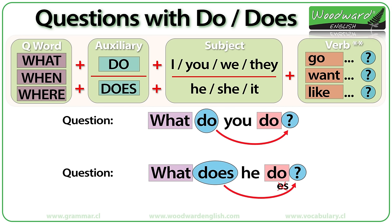Then we have the question: What do you do? People ask why there are two DOs in that question. The first DO is necessary to make a question. The second DO is because of the verb or action TO DO — I want to know the activities you do. What does he do? The DOES is because it refers to HE. The DO at the end is because it is the base form of the infinitive TO DO.